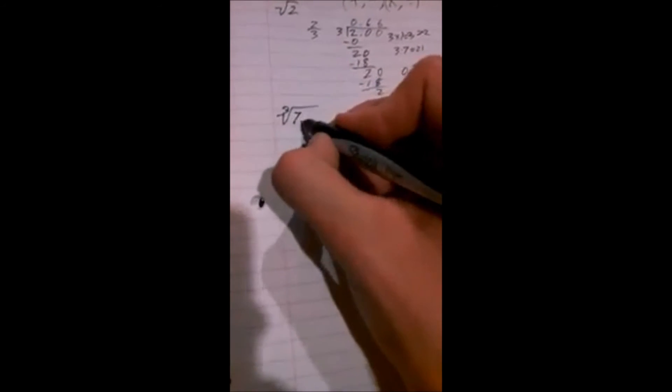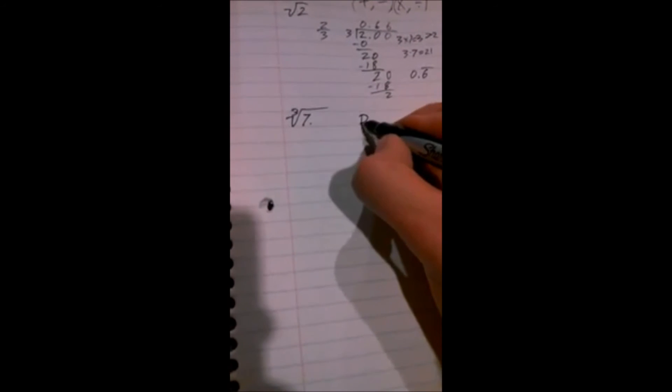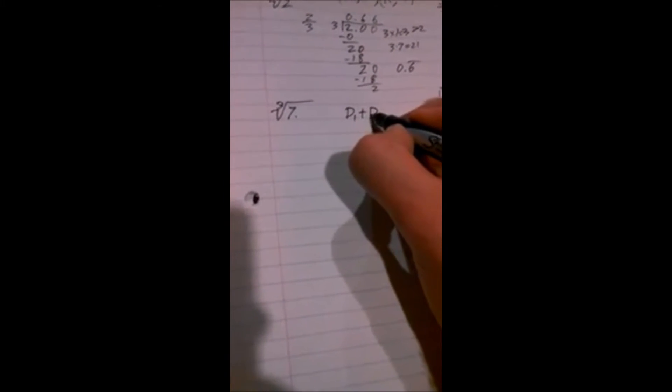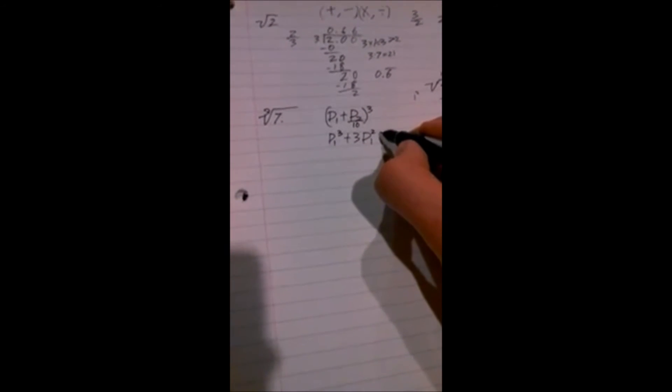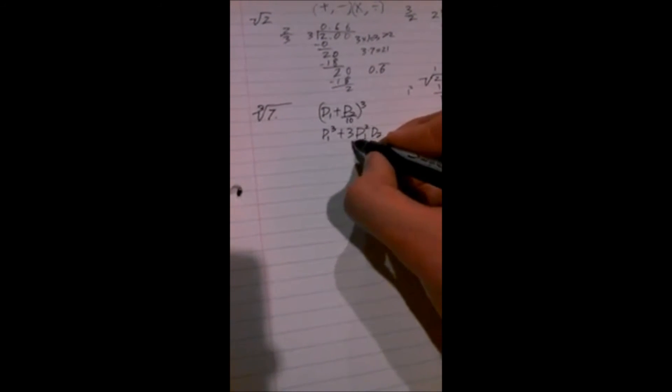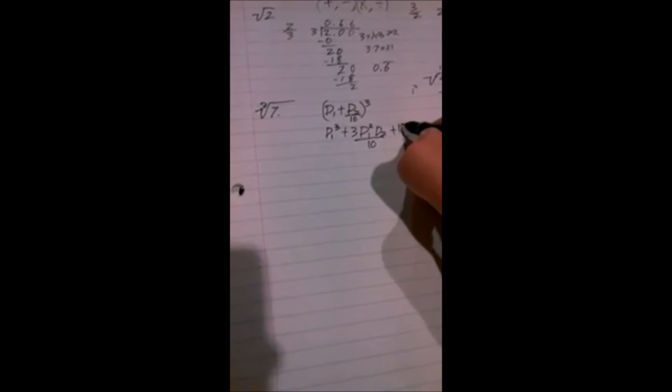So we could also do say a cube root of 7. So to do a cube root we take the first digit plus the second digit and cube it. And that would of course give you D1 cubed plus 3D1 squared, and that D2 would be again one tenth as large as the first one. So D1 squared D2 over 10, plus 3 D1 D2 squared over 10 squared, plus D2 cubed over 10 cubed.